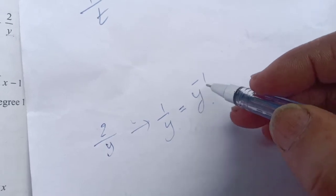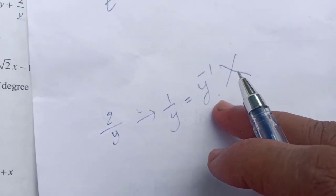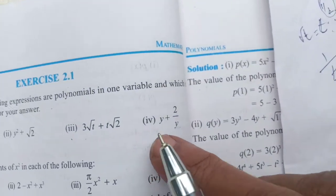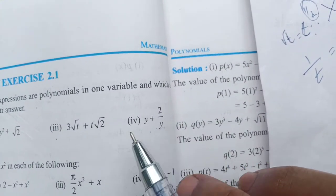We cannot take it because we need a real number in this case. We cannot take this one as a polynomial. Therefore, it is not a polynomial. Then 3 and 4 are not polynomials.